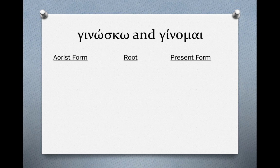To illustrate how these verbs form, we're going to use two verbs: ginosko, which I believe we met in chapter 20, and ginomai, which we are going to learn here in chapter 22. Let's start with the aorist form of ginosko. Ginosko means 'I know,' and the aorist form would be egnon.